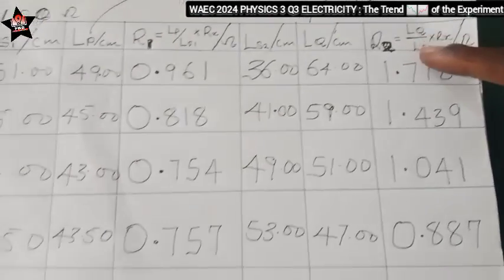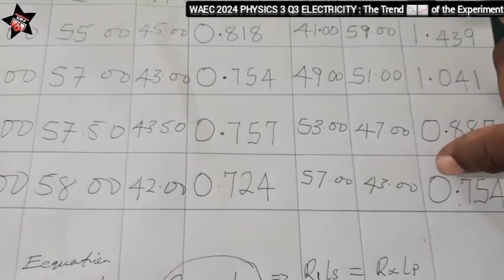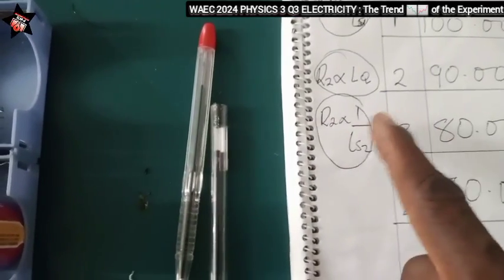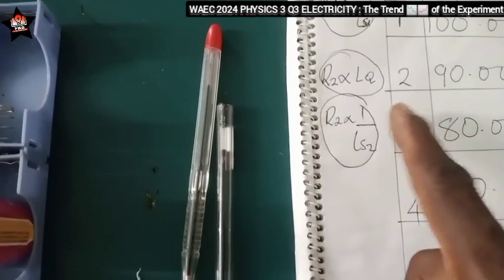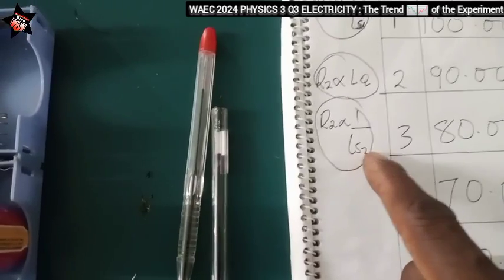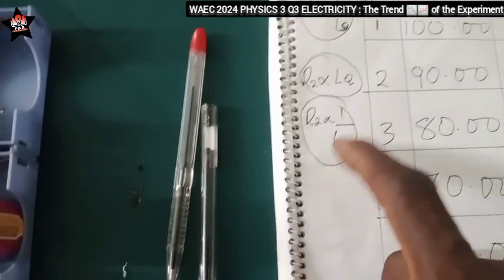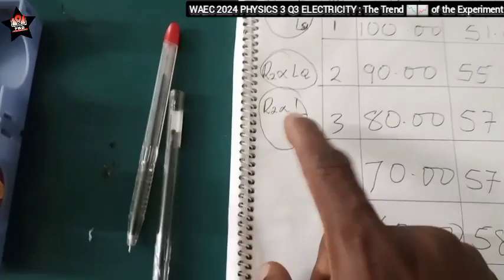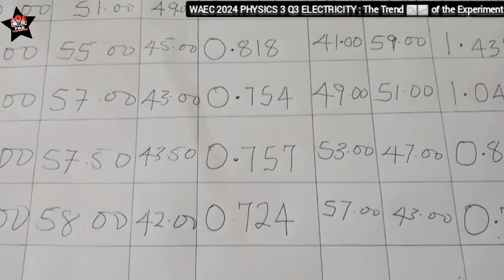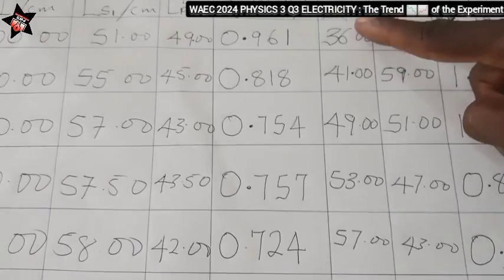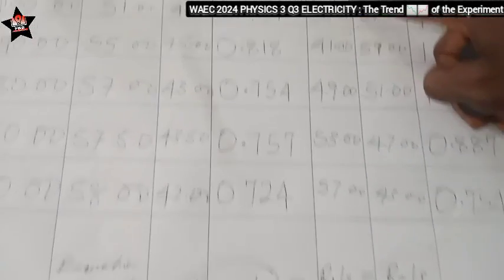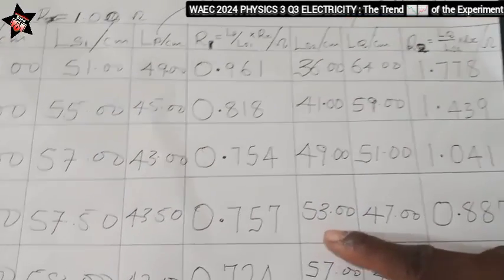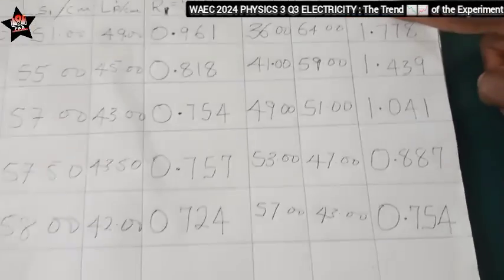Lastly, R2 and Ls2 they have an inverse relationship, increase-decrease, decrease-increase. So these parameters, these are the relationships in the experiments. So you have Ls2 is increasing down, R2 is supposed to decrease. Let's confirm that.